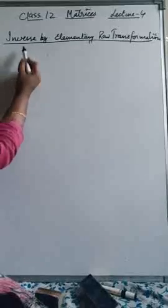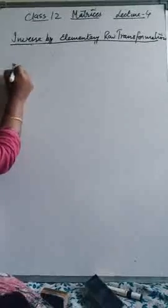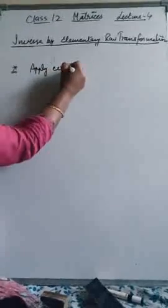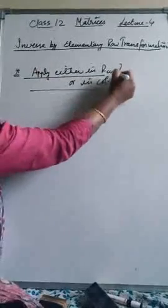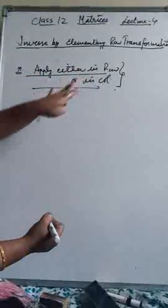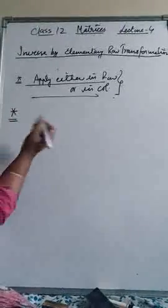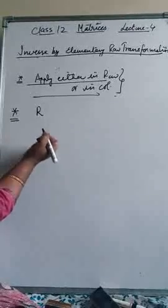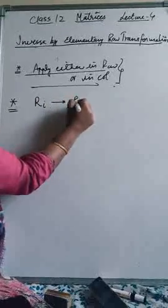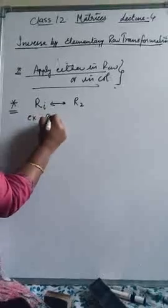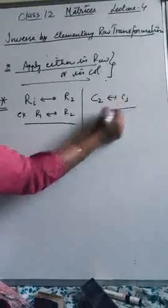Now, before telling you how to find the inverse by elementary row transformation, keep in mind three to four rules. First, apply operations either in rows or in columns — 99% of students make a mistake here. Don't apply row and column operations both at the same time. Second, if you want to interchange row 1 with row 2 or column 1 with column 2, you write R1 ↔ R2 with a double arrow, for example C2 ↔ C3.